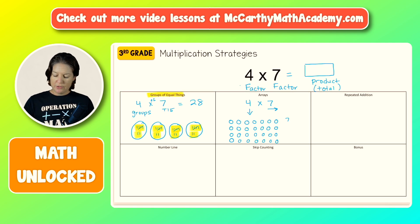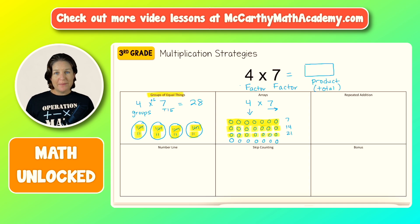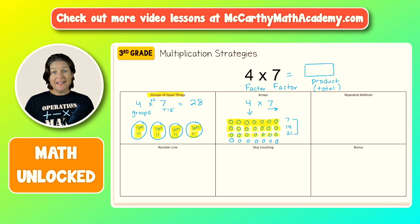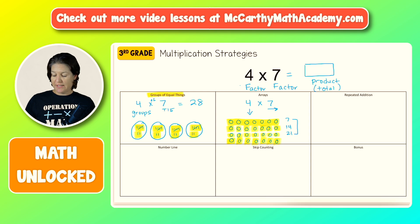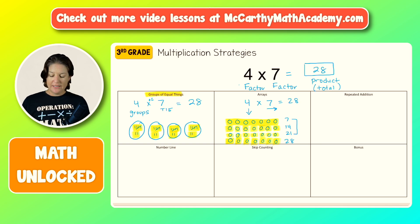Now we can count them up. We know we have seven in the first row, then we continue: eight, nine, ten, eleven, twelve, thirteen, fourteen — stopping to track the amount as we count. This also starts to build understanding of skip counting by sevens. Continuing: fifteen, sixteen, seventeen, eighteen, nineteen, twenty, twenty-one, twenty-two, twenty-three, twenty-four, twenty-five, twenty-six, twenty-seven, twenty-eight. Same product. Four times seven equals a product of 28.